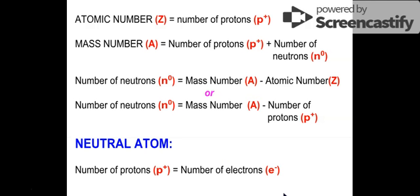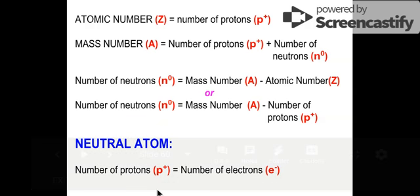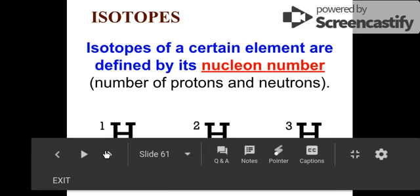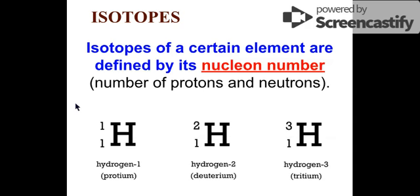Learning all of these things, let's now apply this to identifying the number of subatomic particles of the different isotopes. On your screen you see the three isotopes of hydrogen. Isotopes — remember — they differ in the nucleon number, which means the number of protons and neutrons. Isotopes are atoms of the same element, but these atoms have different numbers of neutrons.